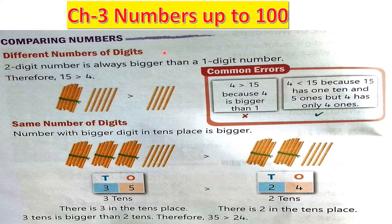Hello everyone. We are reading chapter 3, which is numbers up to 100. Today we will learn comparing of numbers. We have learned in chapter 2 about comparing numbers and how to use the symbols smaller than, greater than, and equal to. Here, the same thing applies, but the numbers in this chapter are bigger.